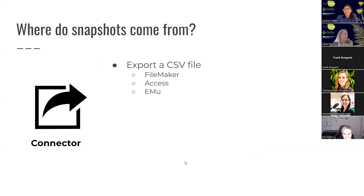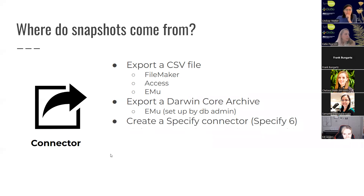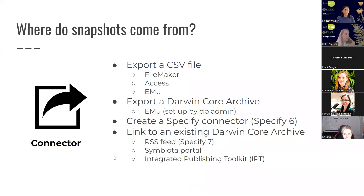If you manage your data in FileMaker, Access, or EMU, you're probably going to be exporting a CSV file. EMU also has the possibility to export a Darwin Core Archive, though this requires some setup by a database administrator. Specify has a separate tool to connect to Symbiota, at least in Specify 6, though there have been some problems with that recently because Specify 7 is the latest and greatest and easier to work with. Or you can link to an existing Darwin Core Archive. The first two options require downloading locally and then uploading, whereas you can just link to an existing Darwin Core Archive and provide Symbiota with the URL to download it.